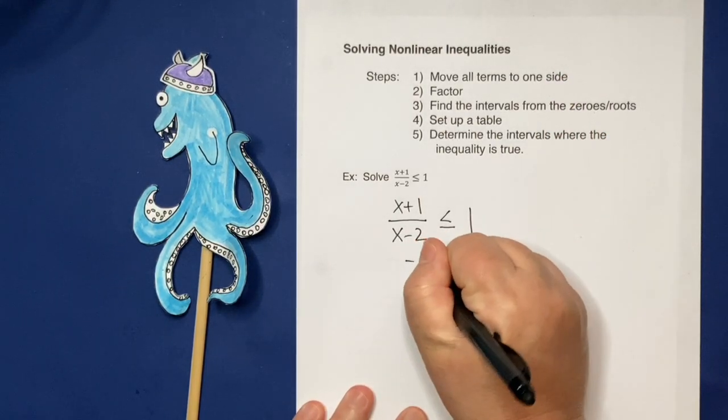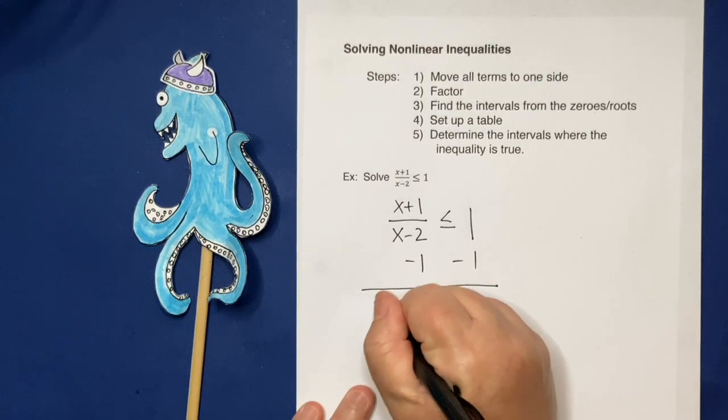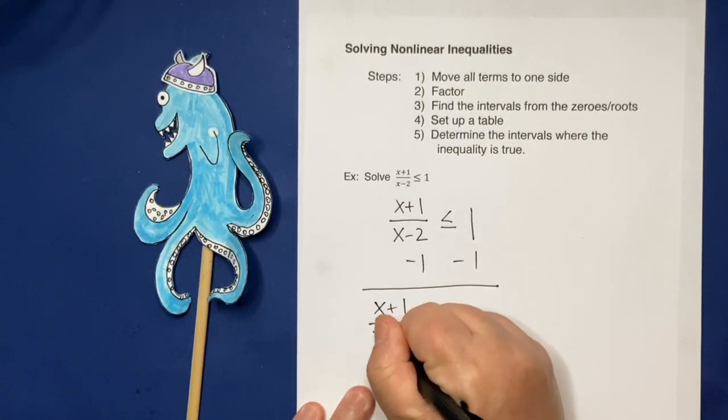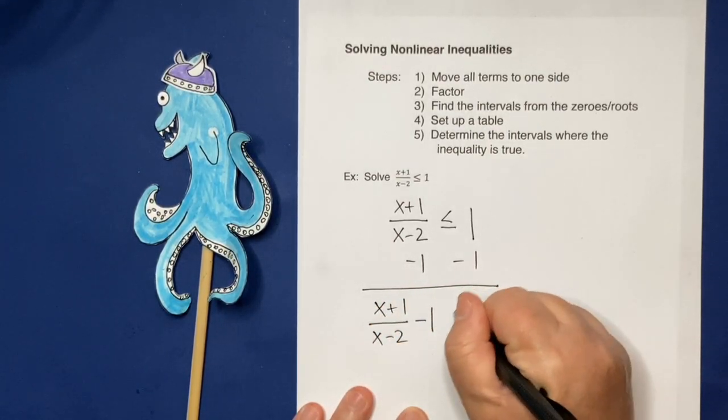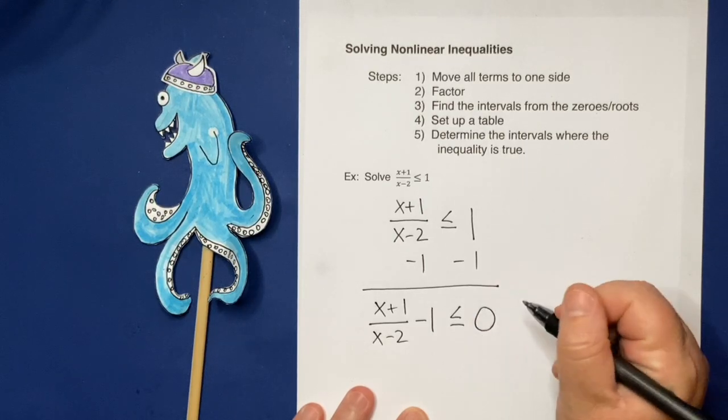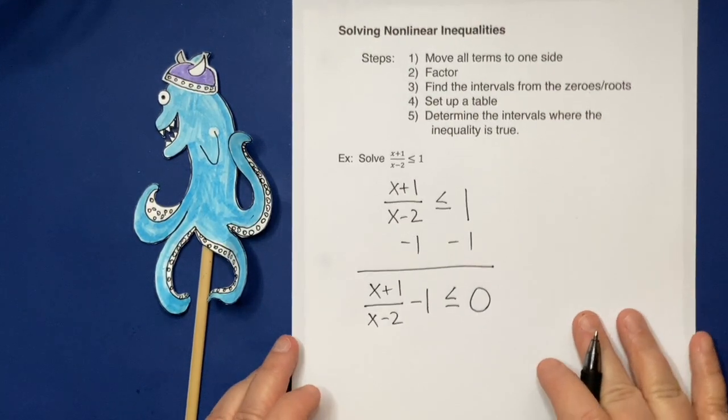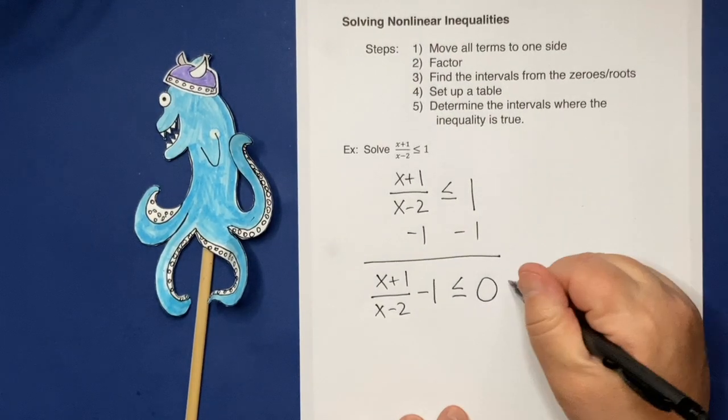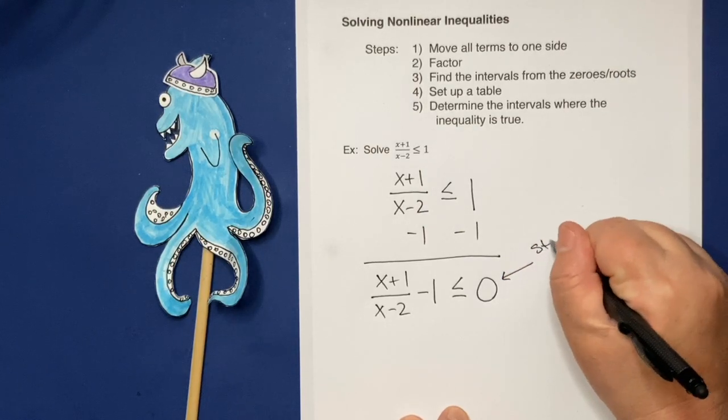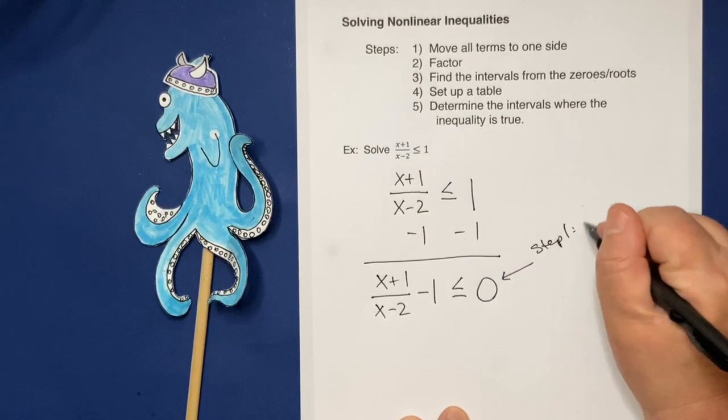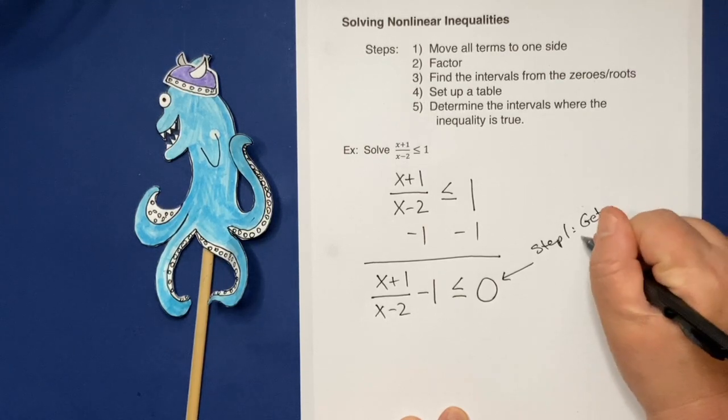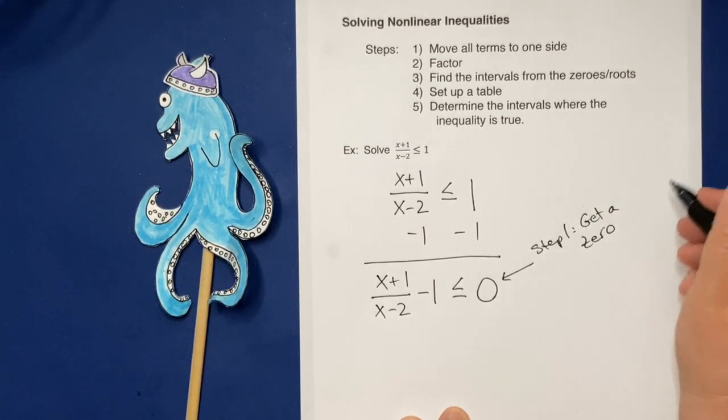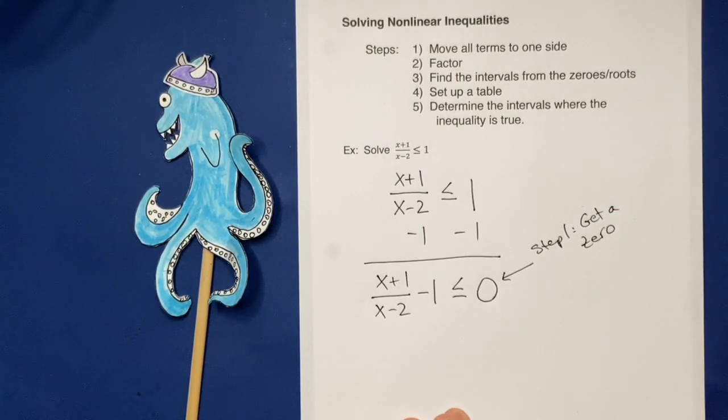So I'm going to subtract 1 from both sides. Woo-hoo. Okay. And now I hear you all holding your breath because you're like, oh no. But the good news is, first step is done. Step 1. Yay! We got to get a 0 on one side, and we've got one.